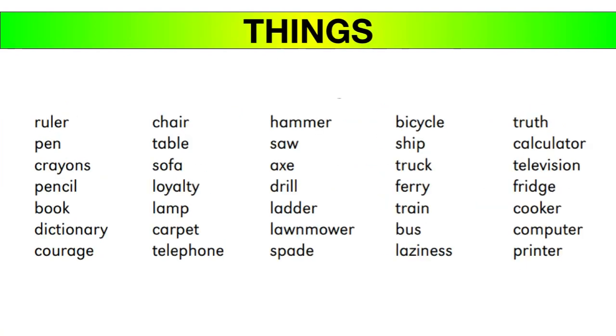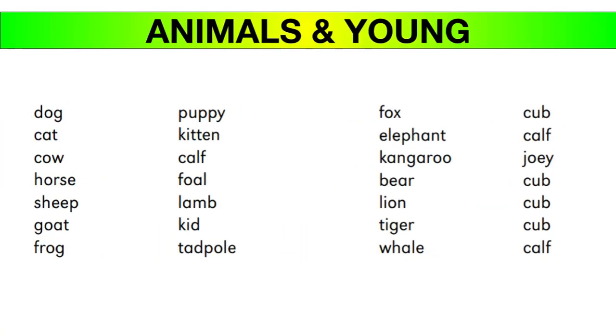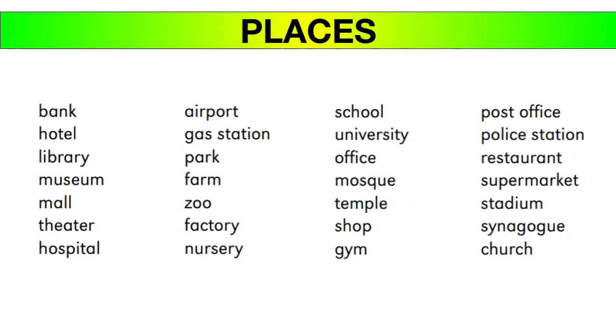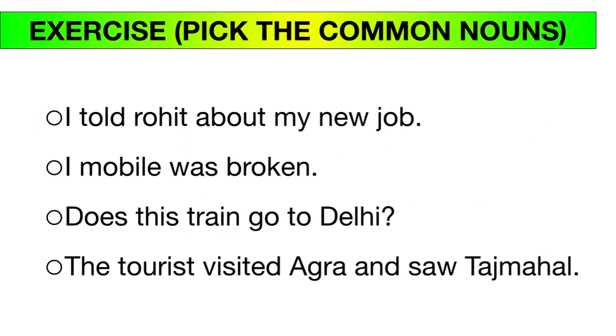So to summarize, common nouns fall into these categories: names of things, names of animals and their young ones, and names of places. All of these general names are common nouns.